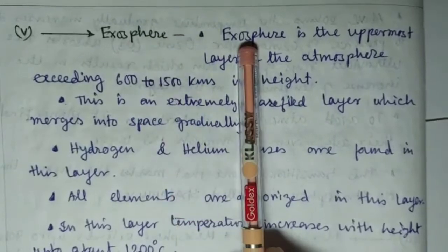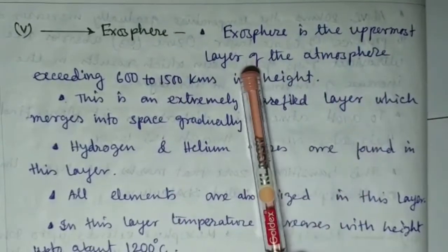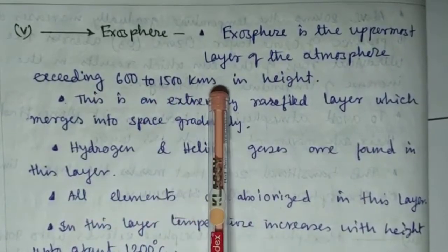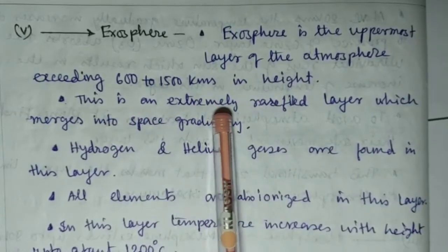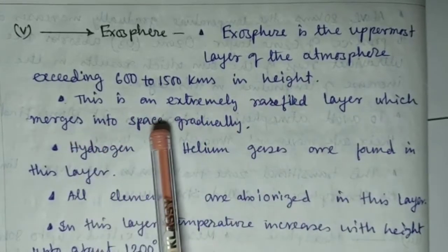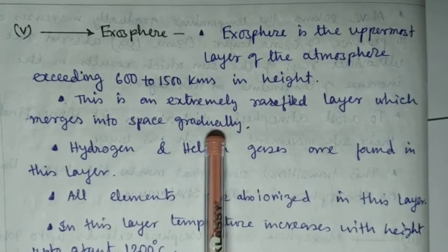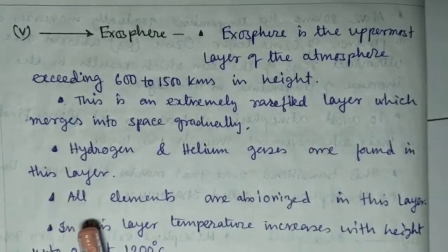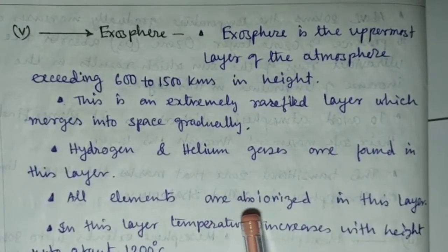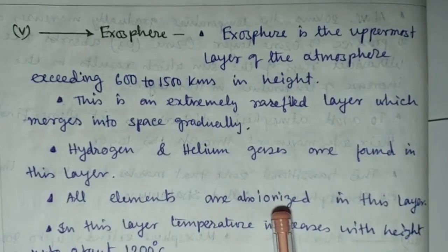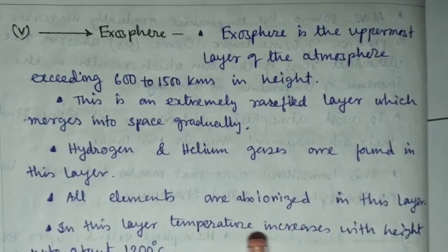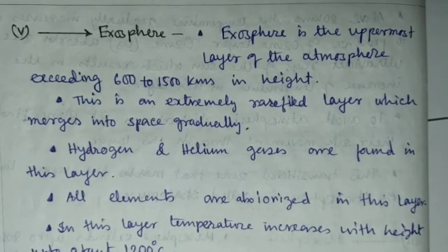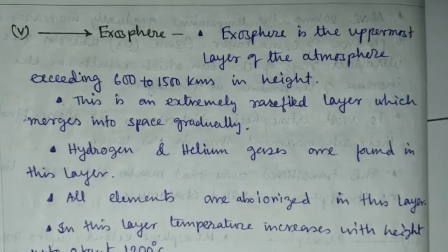Exosphere is the uppermost layer of the atmosphere exceeding 600 to 1500 kilometer in height. This is an extremely rarefied layer which merges into space gradually. Hydrogen and helium gases are found in this layer. All elements are also ionized in this layer. In this layer, temperature increases with height up to above 1200 degree centigrade.